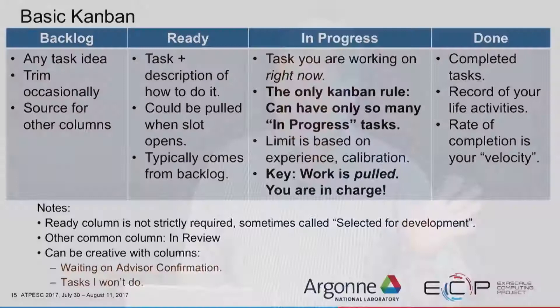Here is a typical basic Kanban board. You have a backlog — any task you're going to do at some point in the future, even speculative. You can go back and trim your backlog later. The next column is items where you know the scope of the work and they could be picked up into in-progress at any time — these are your ready items. If you had an open slot, you could pick up an item from ready and get started.